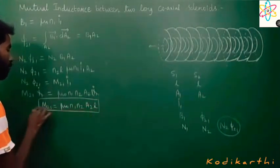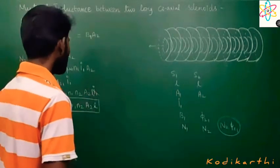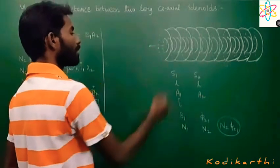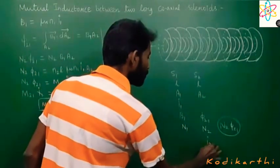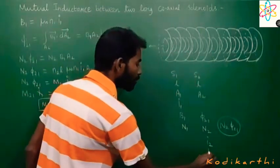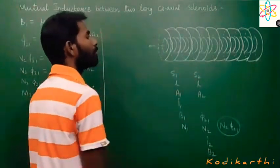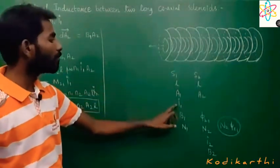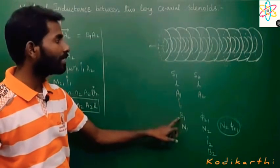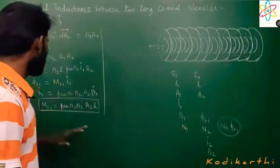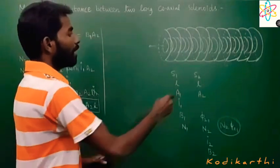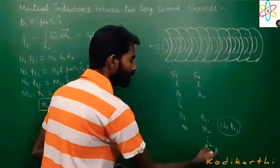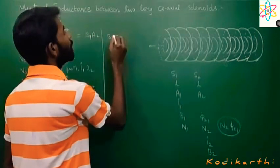Now suppose current is applied in solenoid 2. When current I₂ is applied in solenoid 2, it will produce a magnetic field B₂. This magnetic field will link with solenoid 1, and we calculate the flux linkage and mutual inductance.